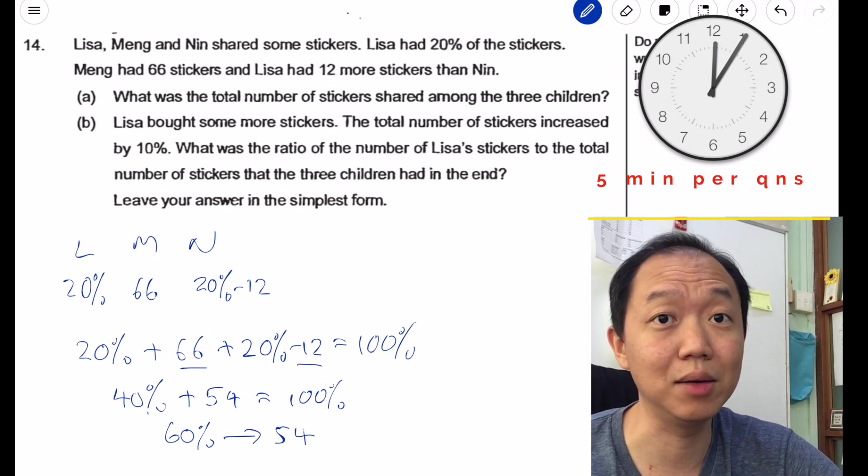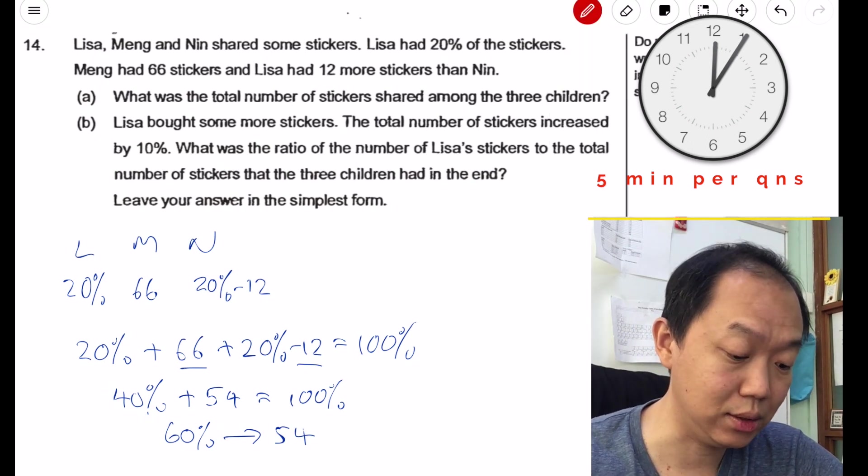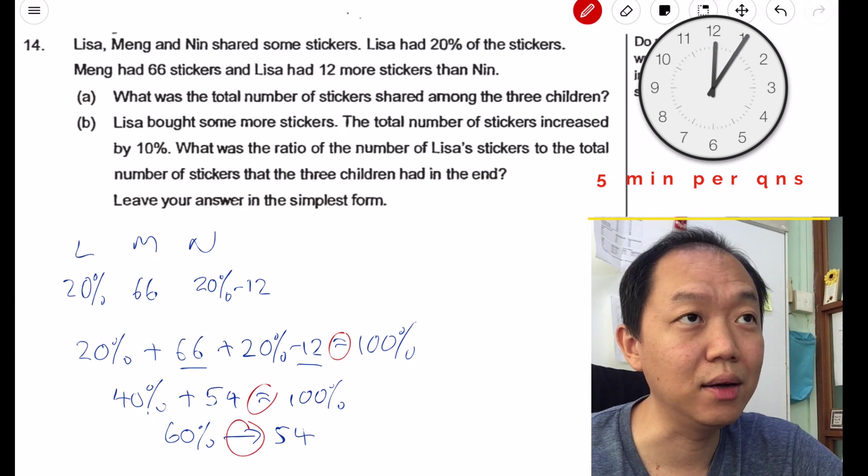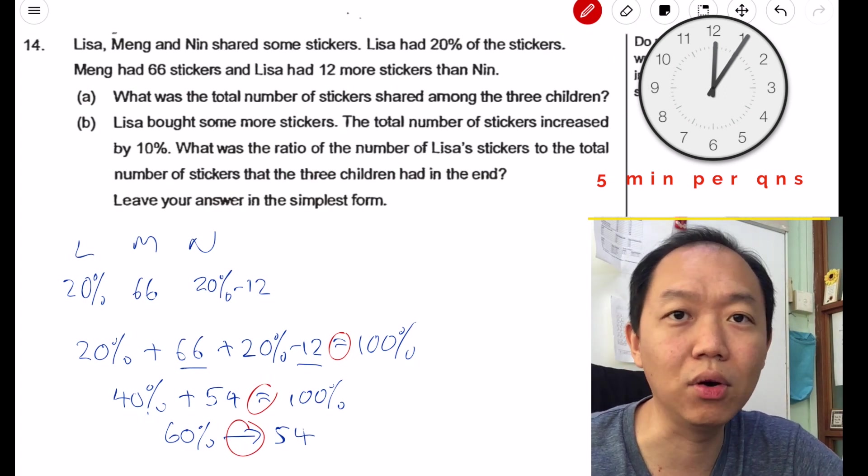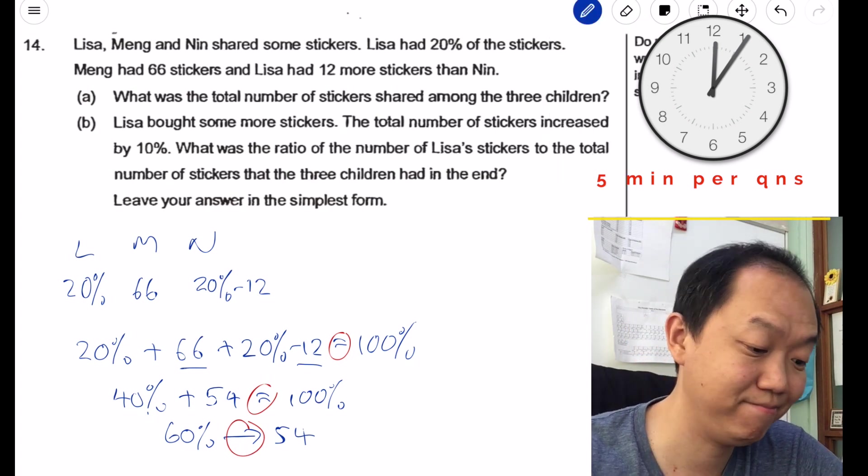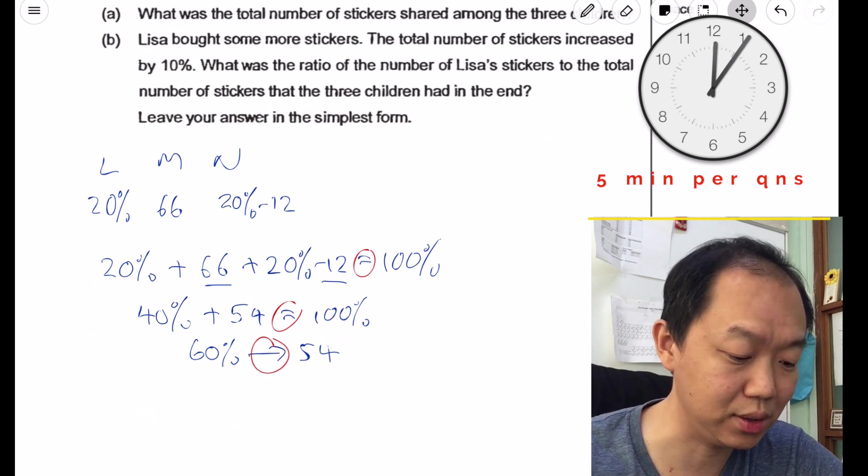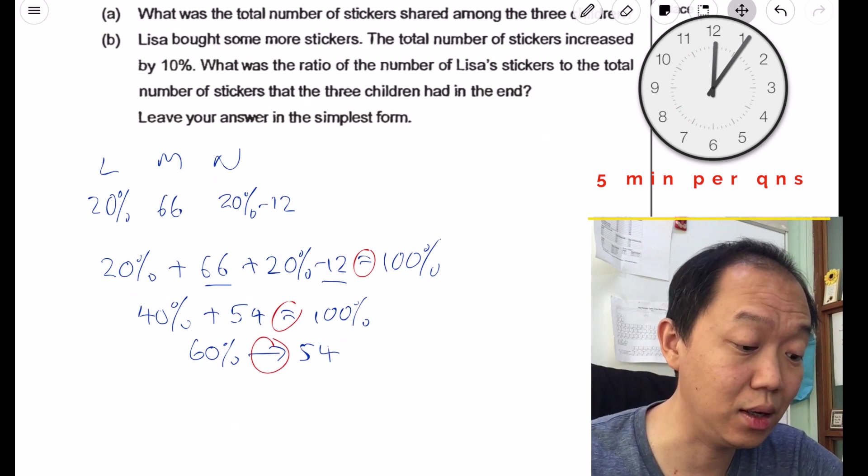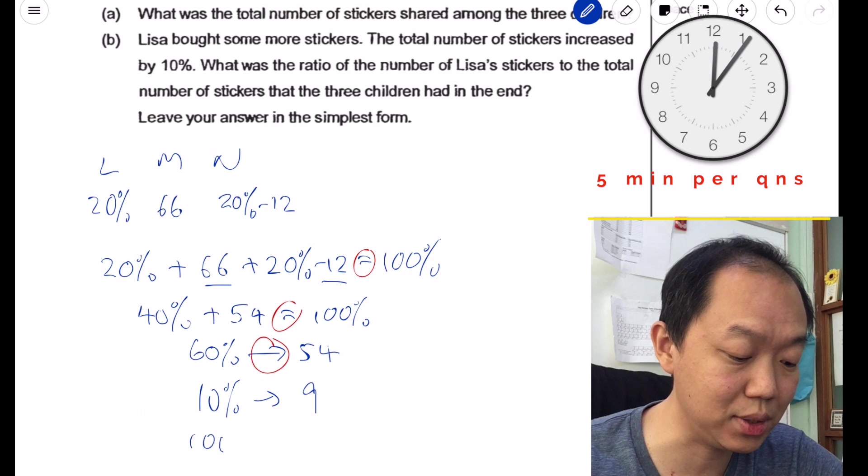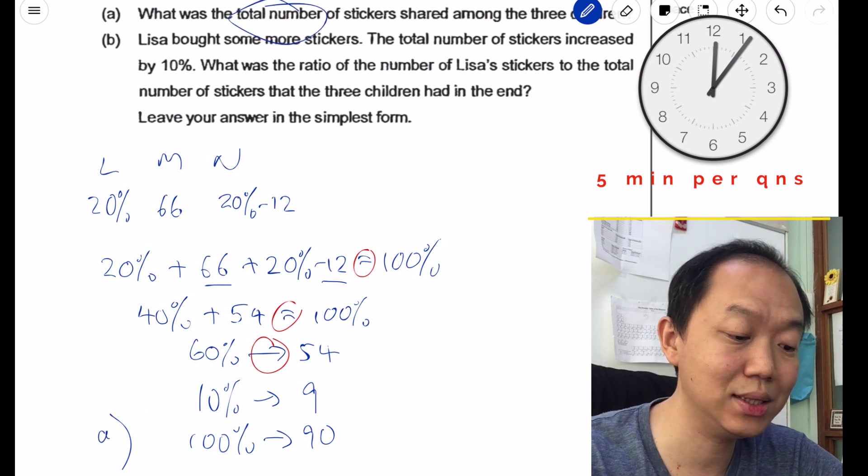I know some of you or your schools are pretty particular about the stuff that you write over here. For example, you're supposed to write arrow, you cannot write equal sign. If your school is very particular about that, please write arrow, don't write equal sign. But for me, I think the ability to solve is more important. So 60% is 54, I want to find 100%. Let's find 10%, so let's divide by 6, that's 9. So 100% will be 90. So for part A, total number of stickers is 90.